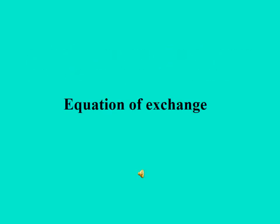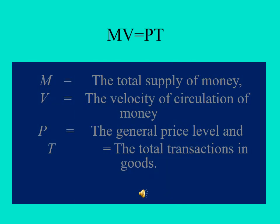Moving on to the Equation of Exchange. Fisher's equation may be explained with the help of the following Equation of Exchange: MV = PT, where M is the total supply of money, V the velocity of circulation of money, P the general price level, and T the transaction of goods.